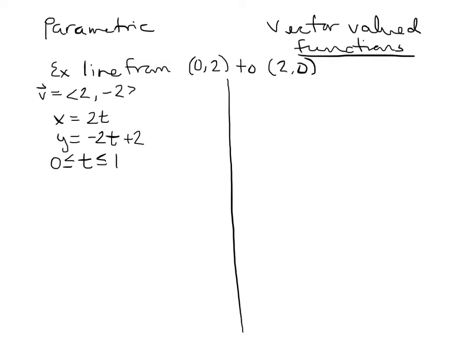The vector-valued function for that exact same line is going to be a vector written in bracket notation, where the x component is the same as in the parametric equations, and the y component is negative 2t plus 2, and we still have our bounds. Notice these are no different other than notationally. You can think of vector-valued functions as parametric equations for a curve or surface, just written in vector form.